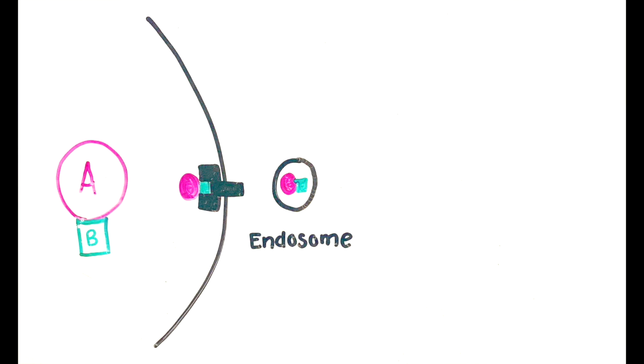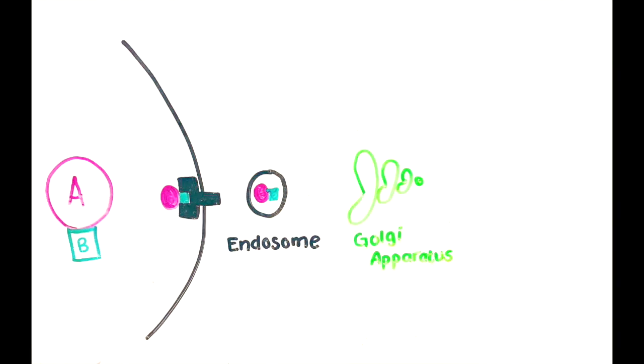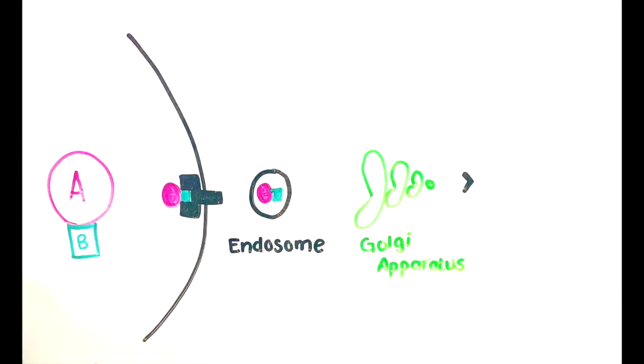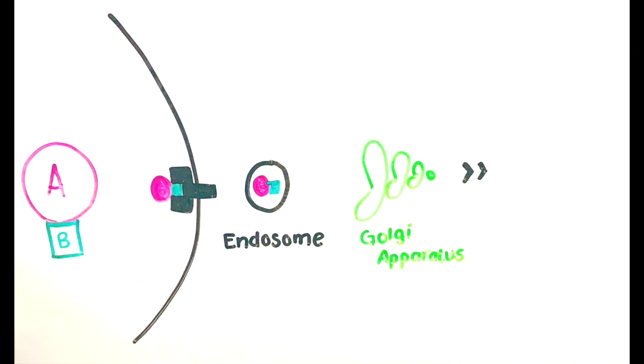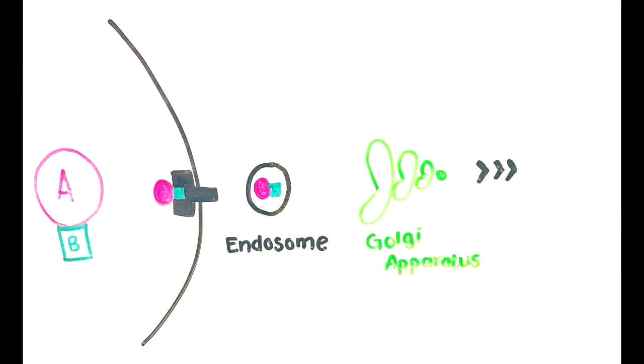This newly created endosome is then moved to the Golgi apparatus, where it is recognized by an endoplasmic reticulum (ER) chaperone protein and transported to the ER.